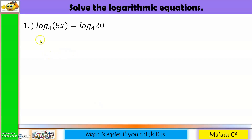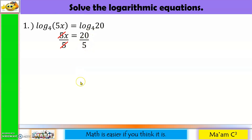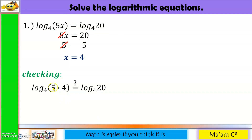Number 1: The logarithm of the quantity 5x to the base 4 is equal to the logarithm of 20 to the base 4. Applying the one-to-one property, since our bases are the same, then u equals v. So 5x equals 20. Dividing both sides by 5, we get x equals 4. To check, substitute x = 4: the logarithm of (5 times 4) to the base 4 equals the logarithm of 20 to the base 4. Since 5 times 4 is 20, both sides are equal. Therefore, x equals 4 is correct.